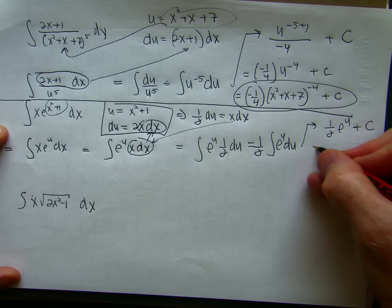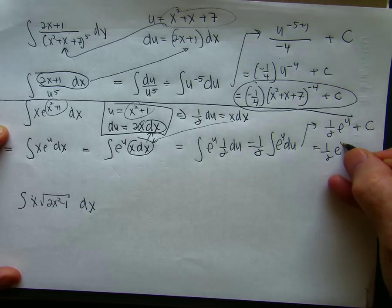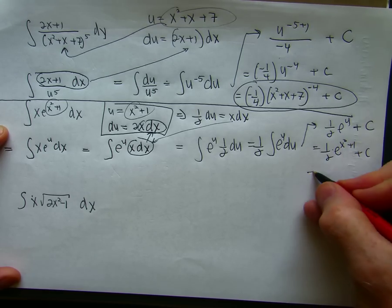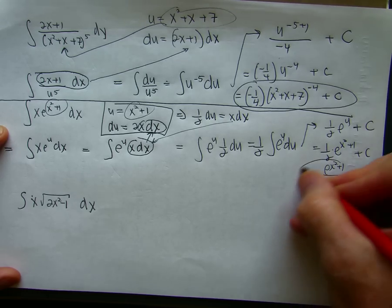Now I'll substitute back in. Look for my u. It's x squared plus 1. And I can write my answer this way, or I could write it this way. It doesn't matter. Either way is fine.